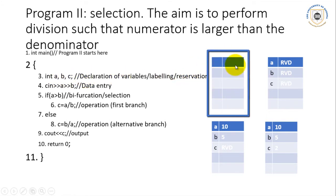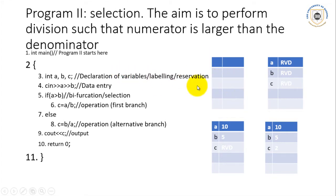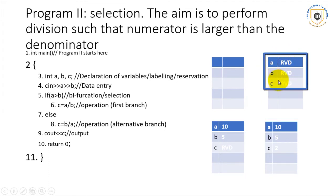Looking at the RAM diagram, you can see that in the beginning, before the program runs, we have an empty RAM — the computer memory is free, waiting for us to reserve part of it. When we reach 'int a, b, c', we reserve some rooms from the empty RAM: one labeled 'a', another labeled 'b', and another labeled 'c'. These rooms are now reserved and waiting for us to put data in.